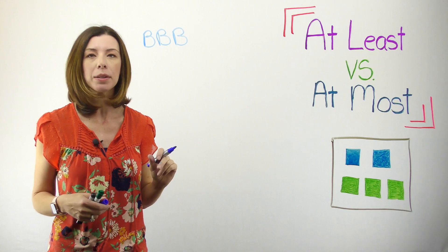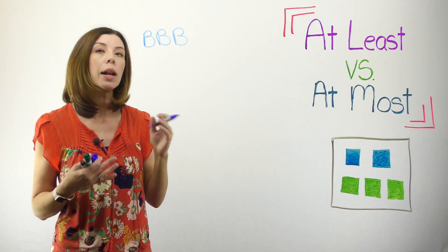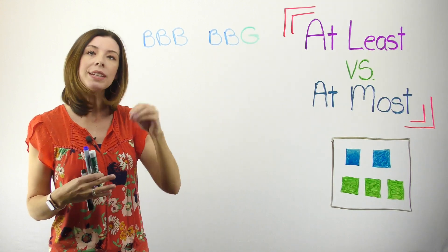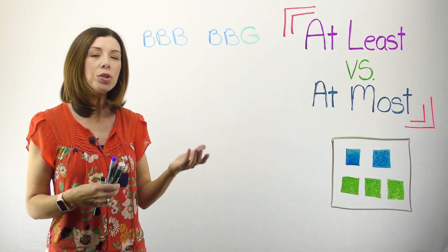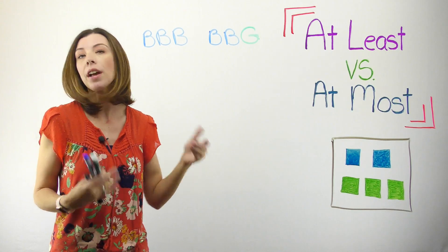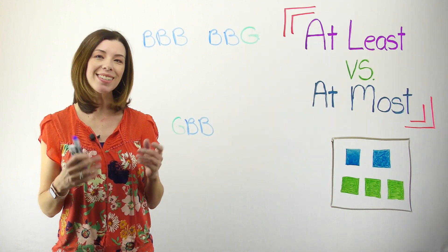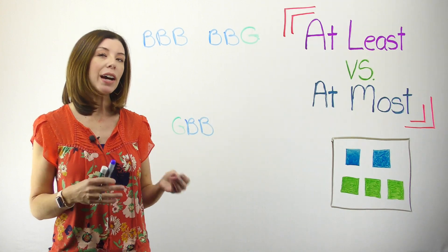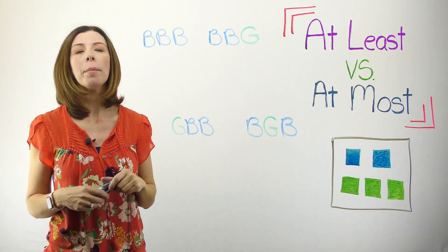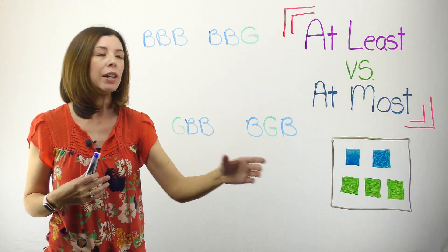Let's think about another possibility. I could also just get two blue cubes, so I could get blue, blue, and then green. If I'm thinking about pulling these out one after the other, I could also think about green, blue, blue — if I get a green first and then two blues, that would also work. The last scenario would be if I got a blue, then a green, then a blue.